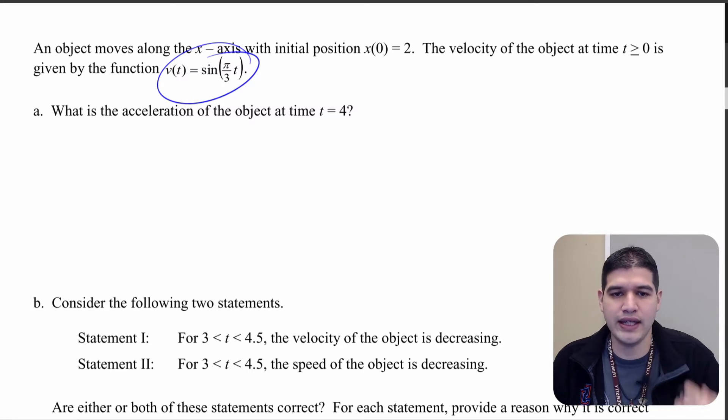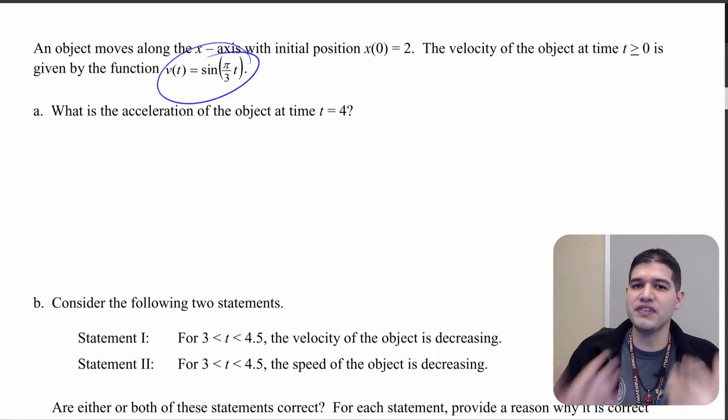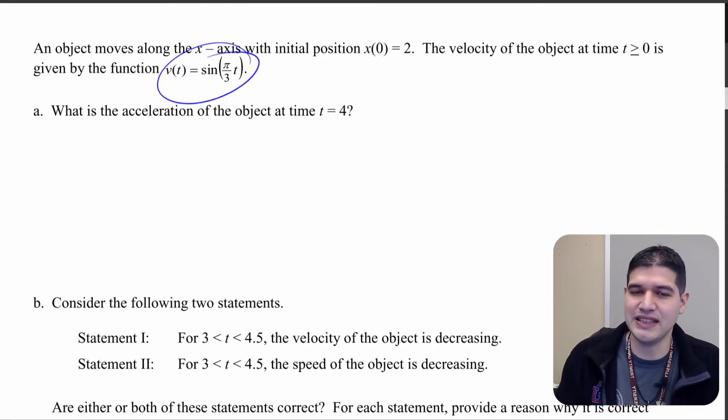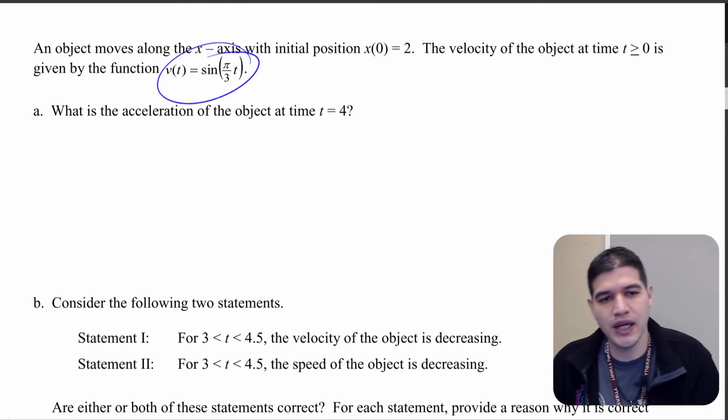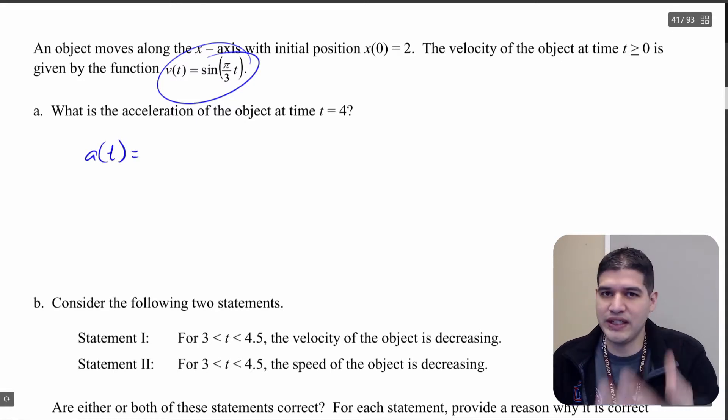So what is in this first question: what is the acceleration of the object at time t equals 4? So we're given velocity, we want to find acceleration, so what connects those two? So if we want a(t), well we know that since we're given v(t), we just need v prime of t.